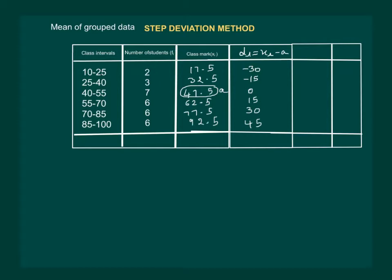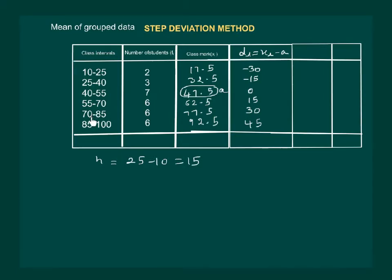Here we observe that all the entries are multiples of 15. So if we divide the values in this column by 15, we get smaller numbers to multiply with the frequency. Also, 15 is the class size, which we denote by H. Our class size is 25 minus 10, that is 15, and it is the same for all class intervals.